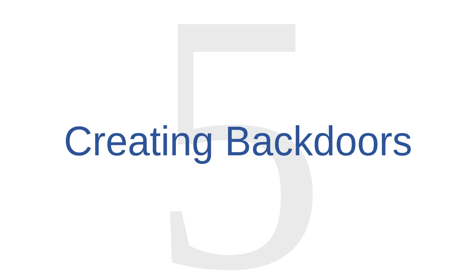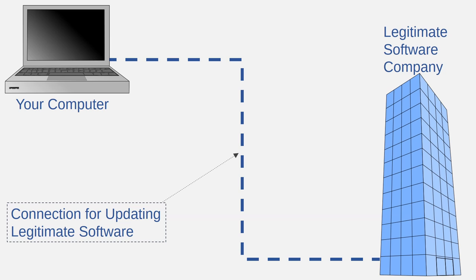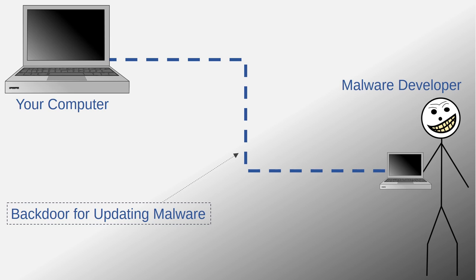Malware function number five is creating backdoors. Many legitimate programs create links between your computer and another system so that your computer can receive important updates. For example, Microsoft releases security updates on the second Tuesday of every month, and computers running Windows will download and sometimes install these updates by default. Many malware programs also establish connections between an infected computer and another system, but these connections are secret and intended to strengthen the malware, not the computer. Using these secret connections, cybercriminals can update malware to make it more harmful, more difficult to remove, or more difficult to identify. These secret malicious connections are called backdoors, and a malware program can use a backdoor to modify itself or install even more malware onto the infected computer.